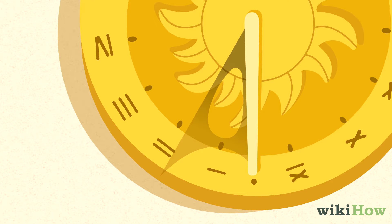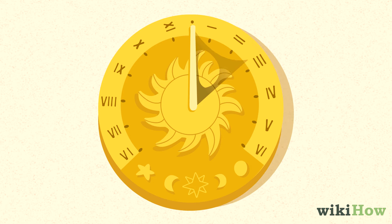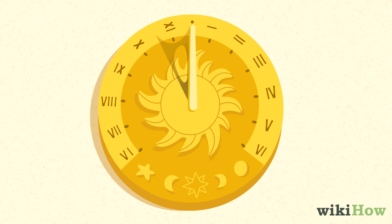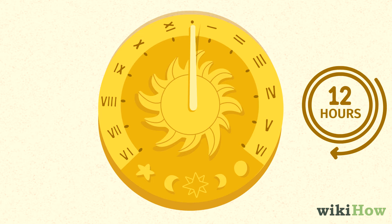Then look where the shadow cast by the gnomon falls on the sundial. The number the shadow lines up with is what time it is. For example, if the shadow lines up with the three on the sundial, it's 3 p.m. If the shadow falls between two numbers, the time is somewhere between those two hours — for example, if the shadow falls halfway between the eight and the nine, it's 8:30 a.m.